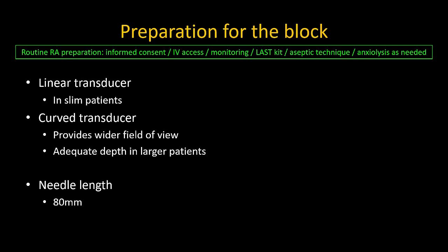When performing this block, a linear transducer is suitable in slim patients, but a curved transducer is recommended where depth to the target structure, the iliopubic ramus, is more than 4 cm. The curved transducer also provides a wider field of view, allowing easier recognition of anatomical landmarks. An 80 mm needle is recommended to ensure adequate length to reach the target.